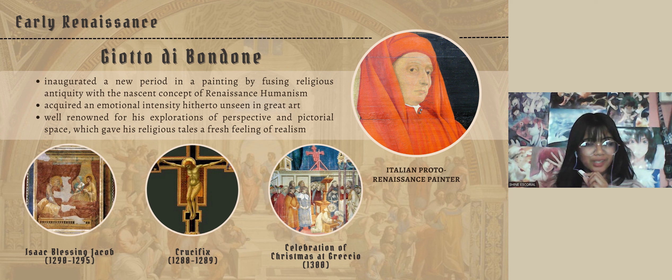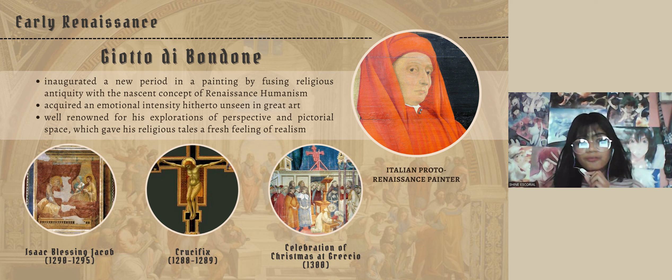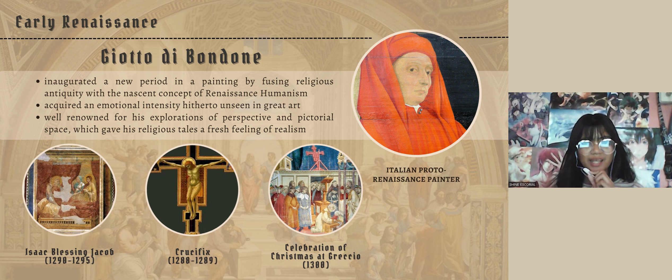The first artist of the Early Renaissance is Giotto di Bondone, an Italian painter and architect from Florence during the late Middle Ages. He worked during the Gothic Proto-Renaissance period and was well-renowned for his explorations of perspective and pictorial space, which gave his religious tales a fresh feeling of realism. Some of his famous works are Isaac Blessing Jacob, The Crucifix, and the Celebration of Christmas at Greccio.